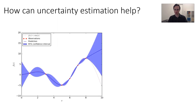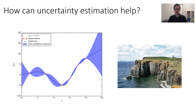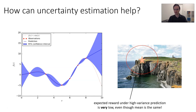Perhaps uncertainty estimation can help. Instead of just estimating the model, we can provide uncertainty estimates, and with these uncertainty methods, we'll avoid trying to exploit the model. To understand why: imagine you have to walk to the edge of a cliff. If you believe your model is confident and correct, you'll walk right to the edge. But if your model has some uncertainty interval, you'll actually be more conservative — you won't walk all the way to the edge because there's some chance you'll fall off. So the expected reward under high-variance prediction is actually very low, even though the mean might be the same.